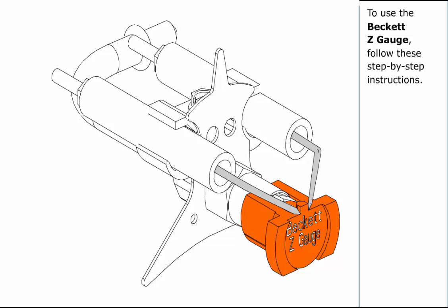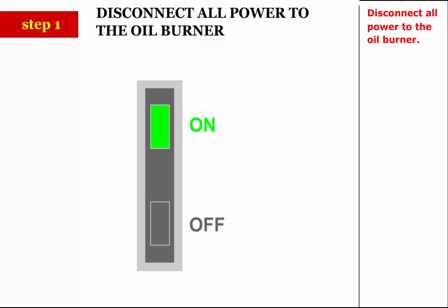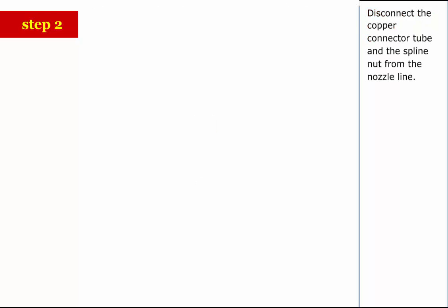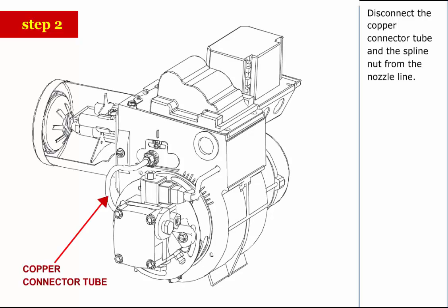To use the Beckett Z gauge, follow these step-by-step instructions. Step 1: Disconnect all power to the oil burner. Step 2: Disconnect the copper connector tube and the spline nut from the nozzle line.